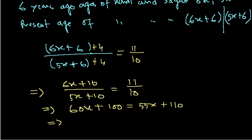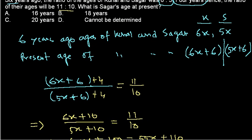And then what we can do here, we can simply cross-multiply: 60X plus 100 equals 55X plus 110. So now if we take this 55 to this side, it will be 5X equals to 10, so X equals to 2. So value of X is 2.